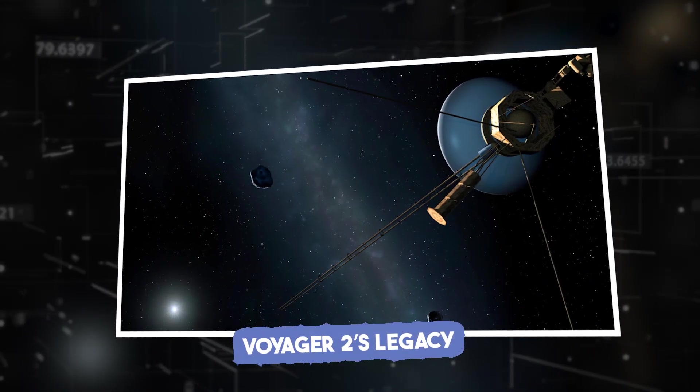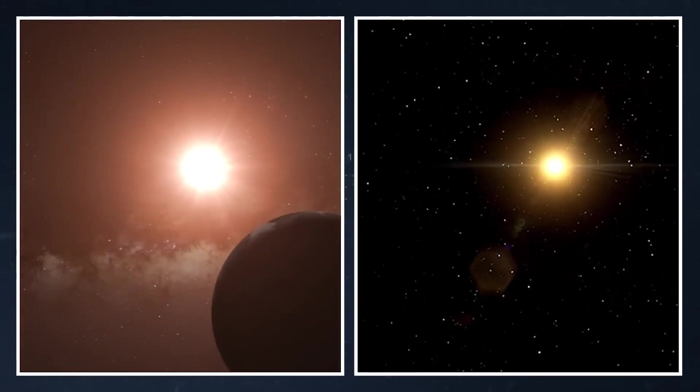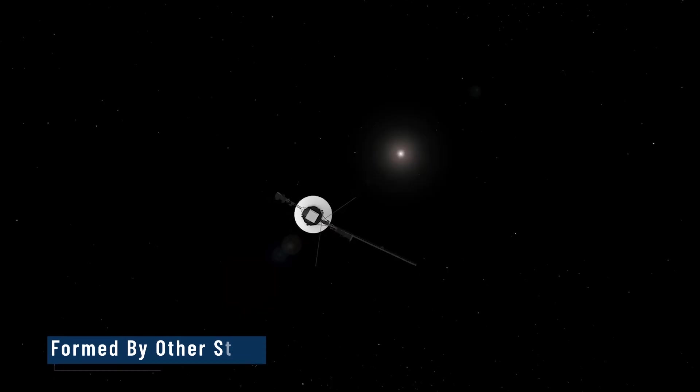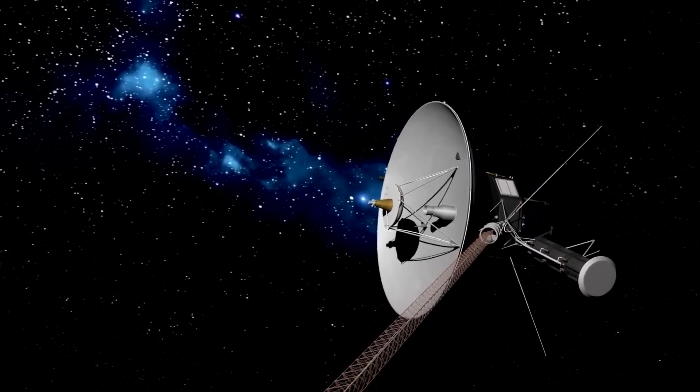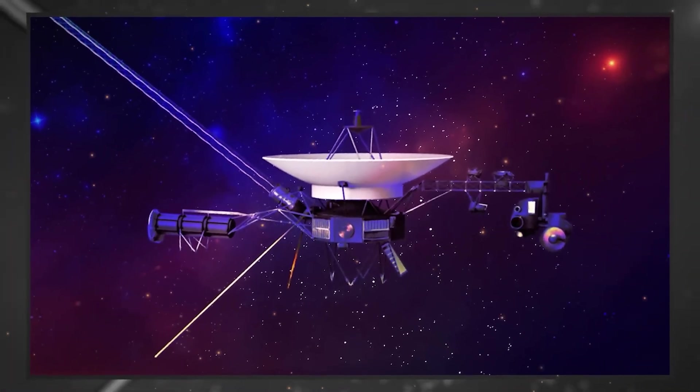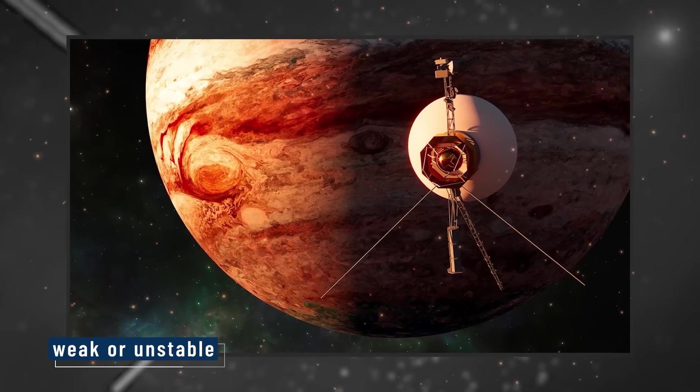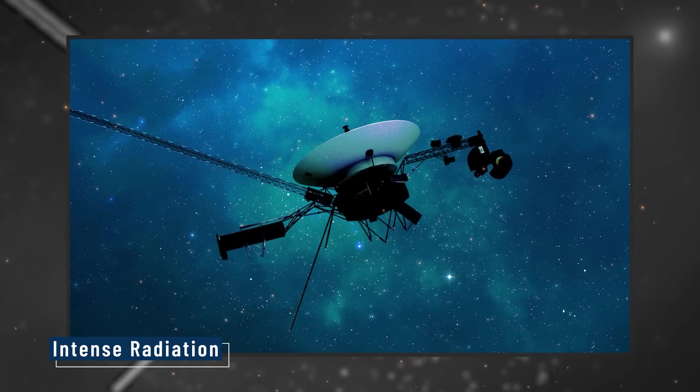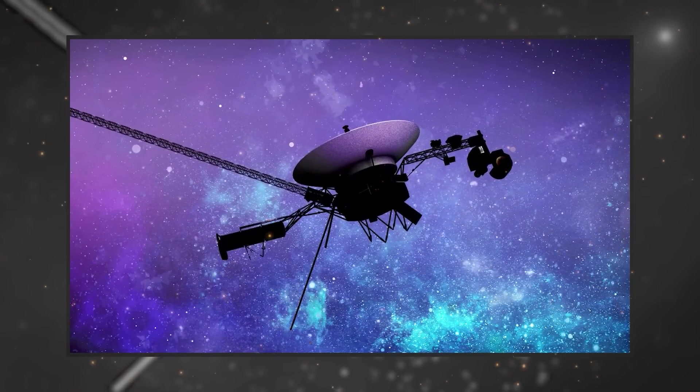Voyager 2's Legacy. Voyager 2's journey beyond the heliosphere provides invaluable insight into the nature of astrospheres, protective bubbles formed by other stars. By studying our own heliosphere in detail, scientists gain clues about how other star systems might protect their planets from cosmic hazards. Understanding these stellar environments is critical for identifying potentially habitable exoplanets. If a star's protective bubble is weak or unstable, life on nearby planets could be vulnerable to intense radiation.